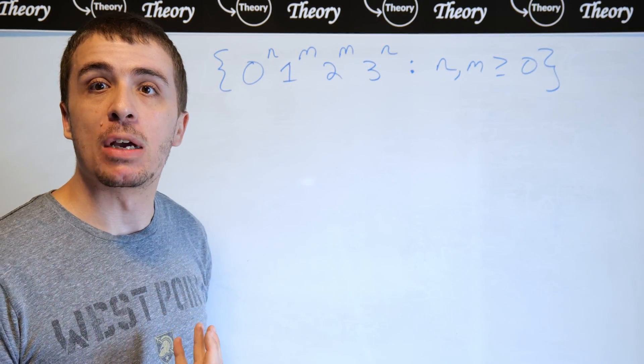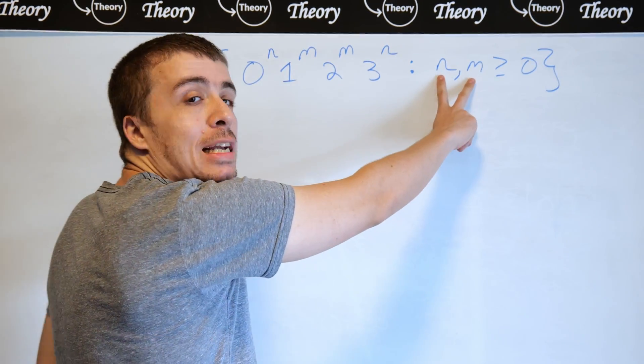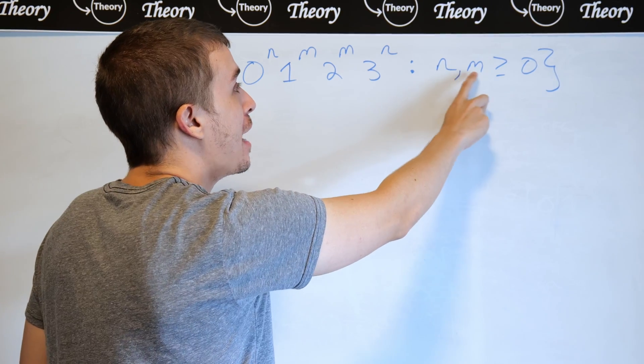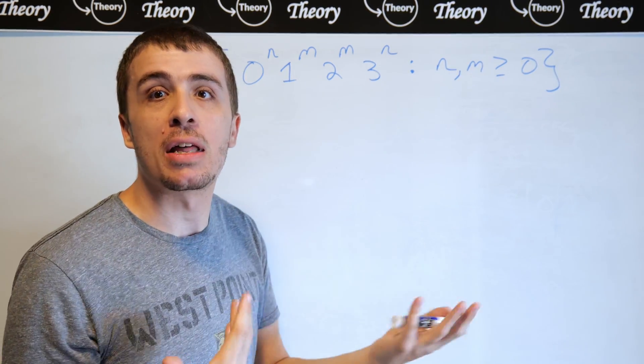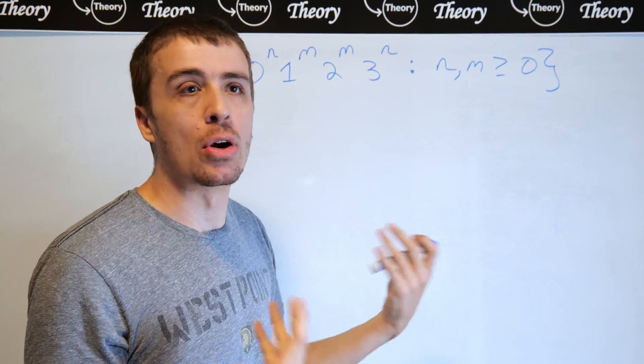One thing that you should always be aware of when making a context-free grammar for anything is any relationship between the counts here. So n and m are at least zero, but there's nothing in common between them, such as n has to be greater than m or equal or whatever.